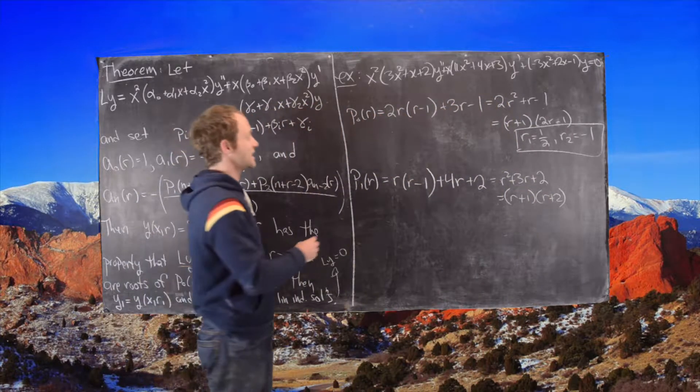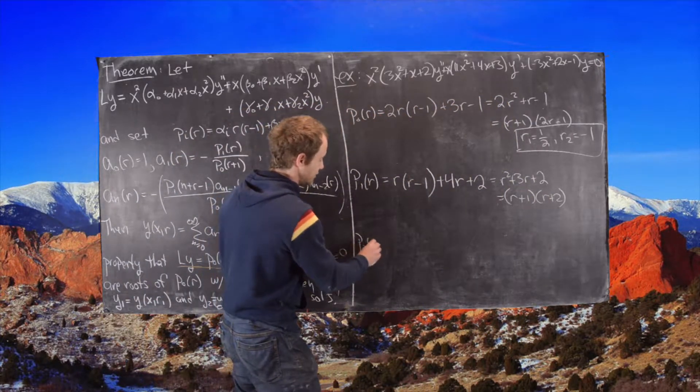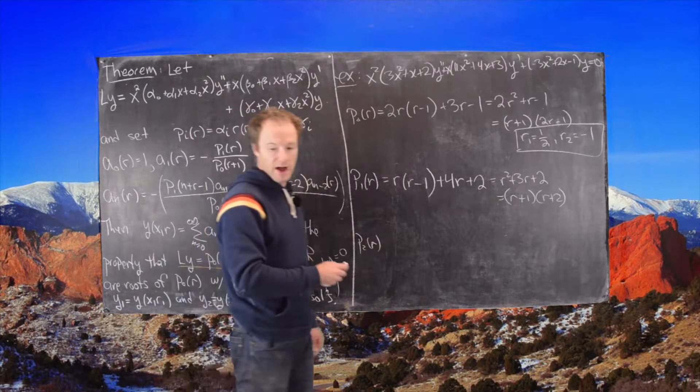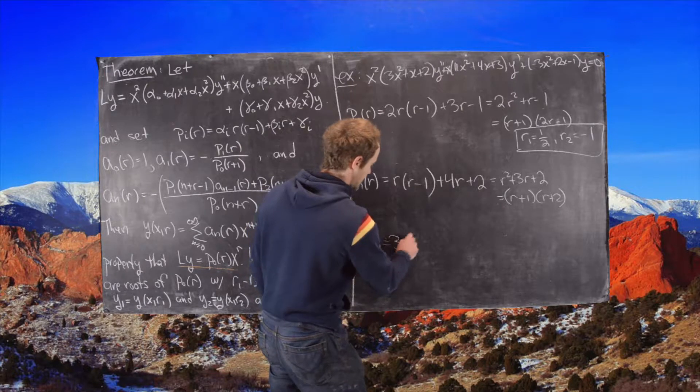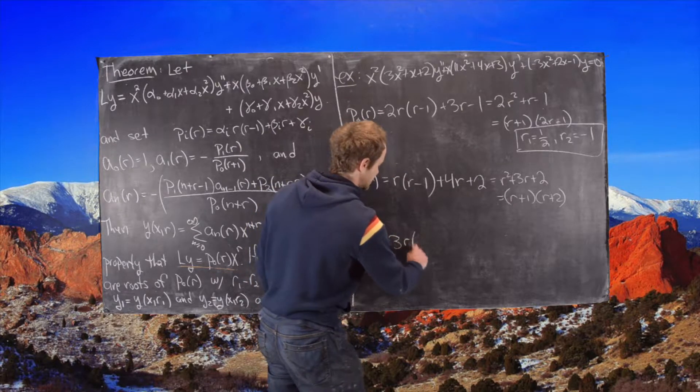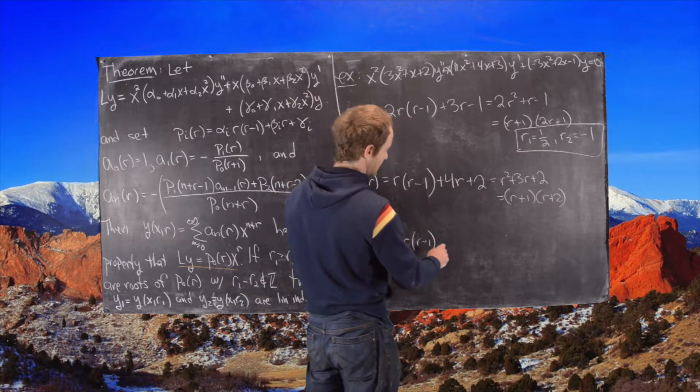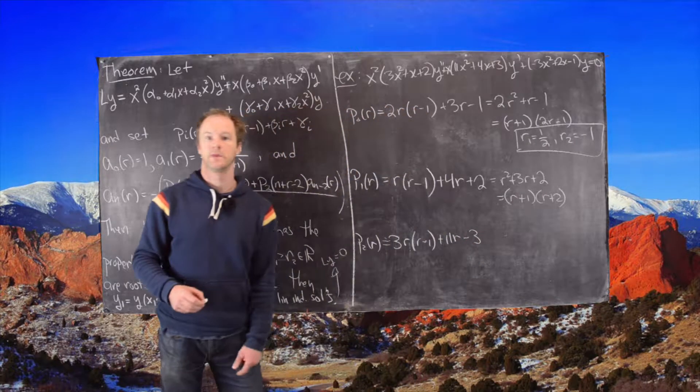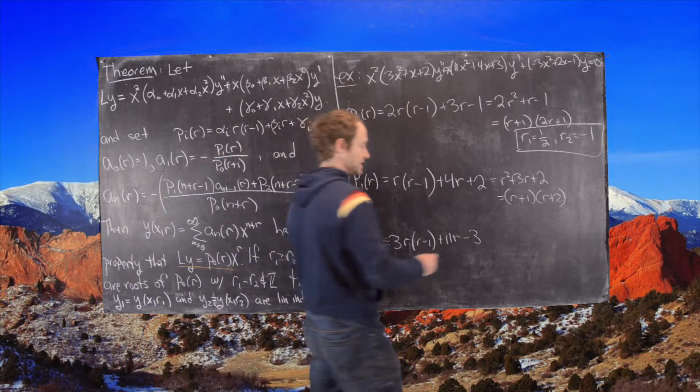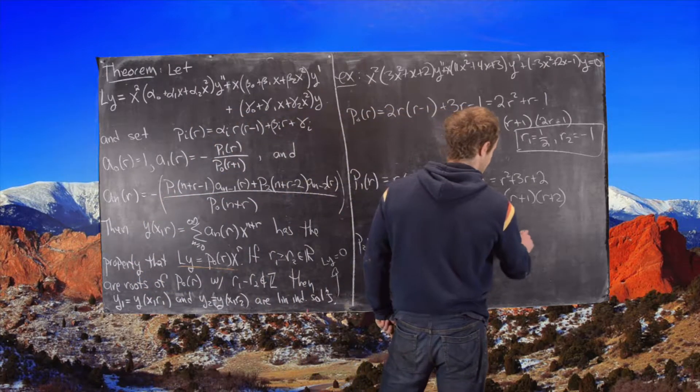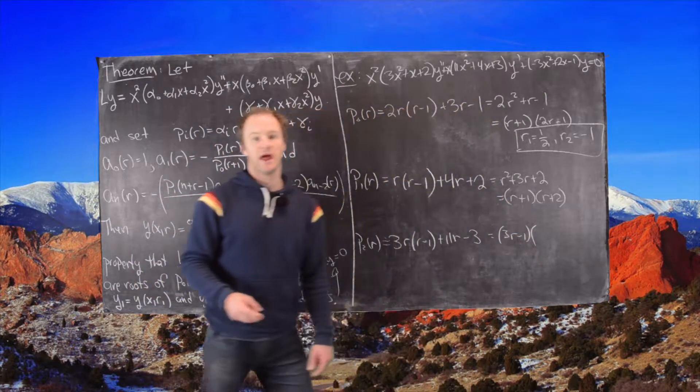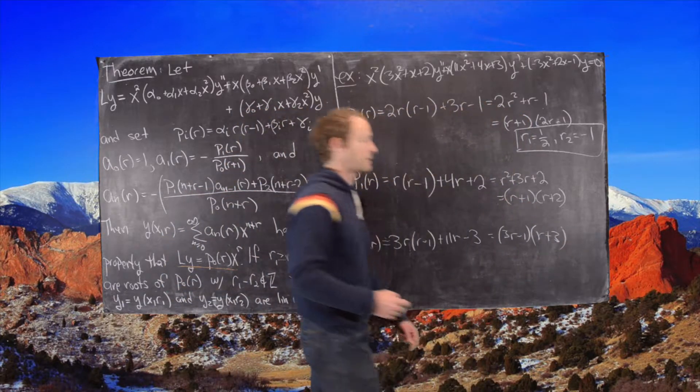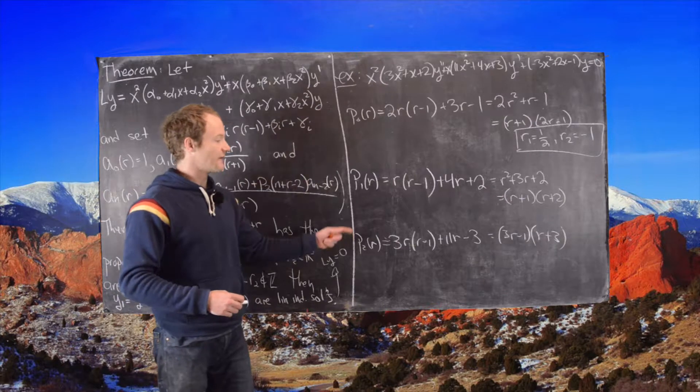And then finally we have p_2 of r will be given by the following. So that will be given by 3 times r times (r minus 1) and then plus 11 times r minus 3. And then I'll just skip to the end here. So this factors like (3r minus 1) and then like (r plus 3). So now we have our polynomials.